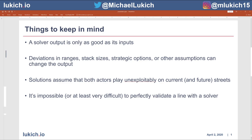Our solutions assume that both players in the hand play unexploitably on current and future streets, unless I node-lock a decision point. And even when I do node-lock a decision point, it still assumes players are playing unexploitably on future streets. Finally, it's impossible or at least very difficult to perfectly validate a line within a solver. They're great tools to confirm hypotheses and give insight into frequencies and range construction, but they really shouldn't be used to confirm a very specific line for one hand. This isn't the end-all be-all — it's just an analysis at this specific hand.